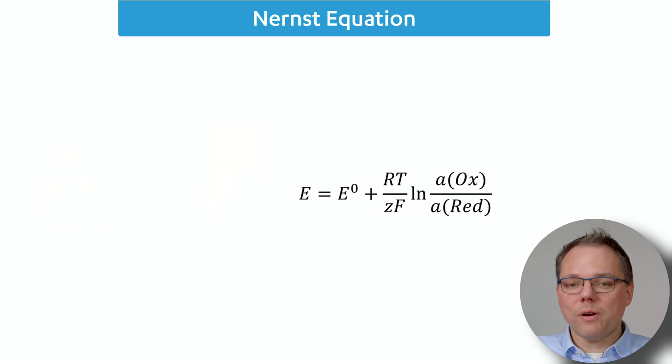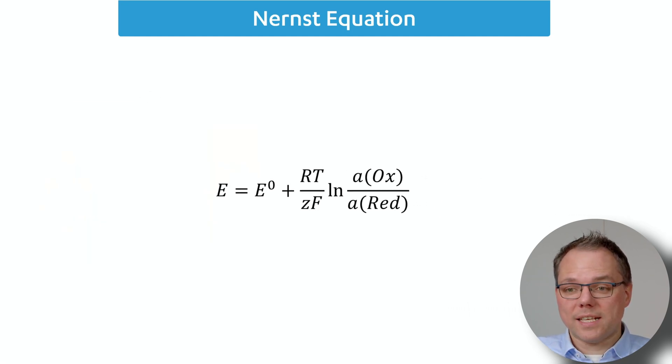What is now in the Nernst equation? Which parameters are we looking at? We want to calculate the potential of our system, so the potential is in there. Then we have a second potential, the standard potential. So you need to know your redox potential under standard conditions if you want to use the Nernst equation.